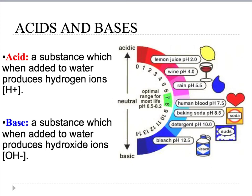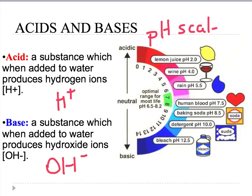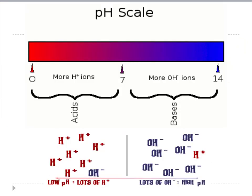We also have acids and bases. An acid is a substance that, when added to water, produces positive hydrogen ions (H+). The pH scale shows us what is an acid and what is a base — neutral is 7. Most life prefers a pH between 6.5 and 8.2, and human blood is 7.5. Bases have more OH− negative ions, and acids have more H+ ions.